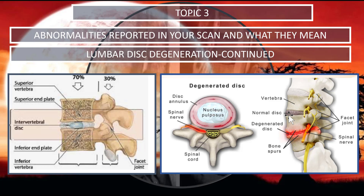Notice that the degenerated disc is much smaller than the one above it. The end plate irregularities would be just above and below the disc where the end plates are. Those end plates are important because they help with the nutrient supply to the disc, and when those end plates become irregular, it does affect the nutrient supply. On the back are the facet joints, which can also have structural changes called facet joint arthropathy. As these disc spaces decrease in height or collapse, it can decrease the diameter of the foramen, which is required to allow the nerve to pass through without being compressed or irritated.